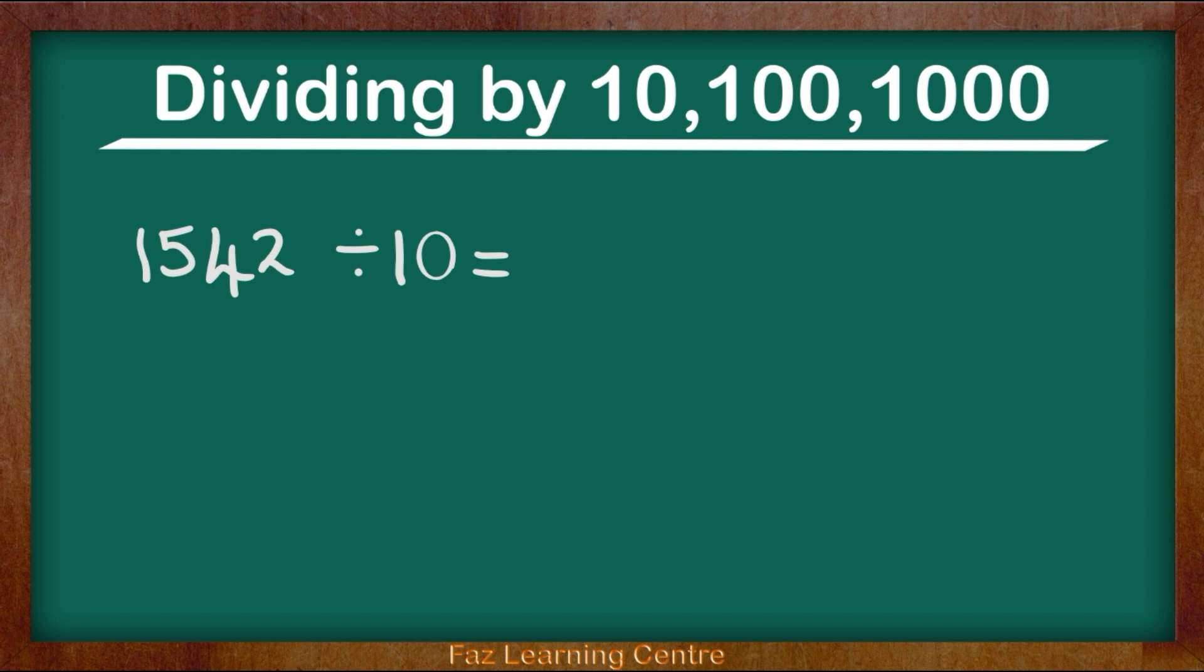So how do we tackle this question? At the moment the number 1542 is a whole number. For example, I have 1542 Smarties. But I need to make this number 10 times smaller. So what I am going to be doing is I am going to bring in a decimal point.